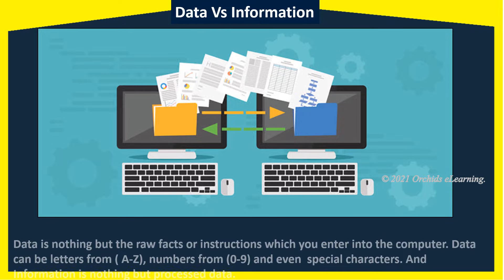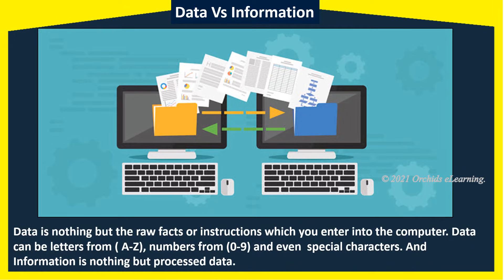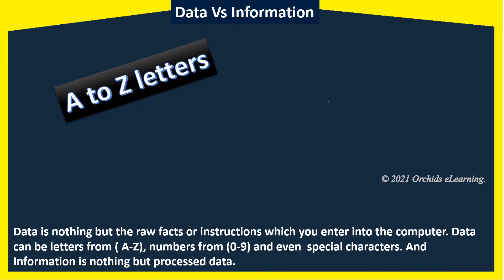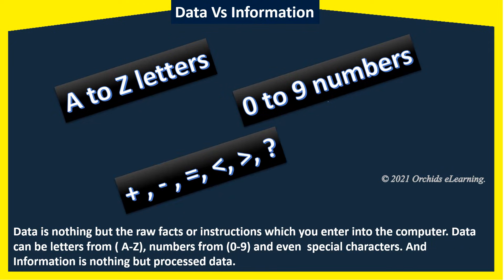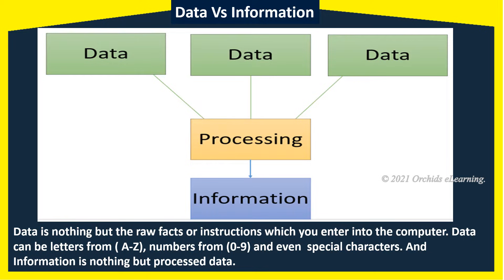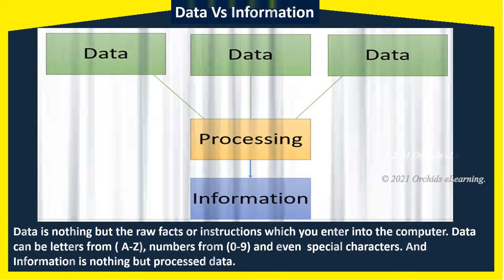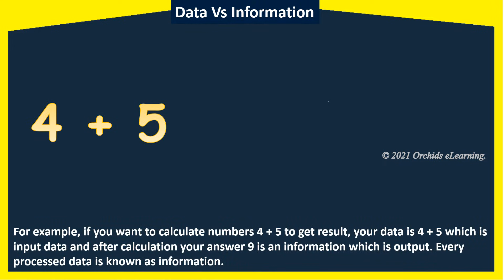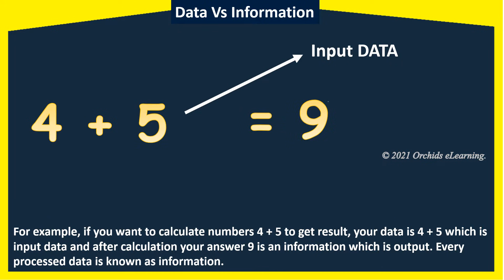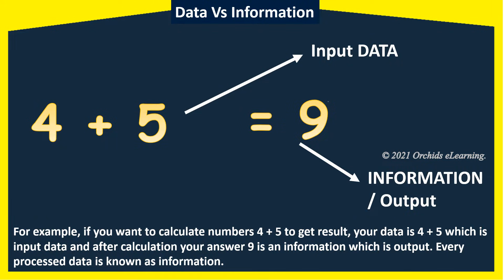Data is nothing but the raw facts or instructions which you enter into the computer. Data can be letters from A to Z, numbers from 0 to 9, and even special characters. Information is nothing but processed data. For example, if you want to calculate 4 plus 5, your data is 4 plus 5, which is the input. After calculation, your answer 9 is the information — that is the output. Every processed data is known as information.